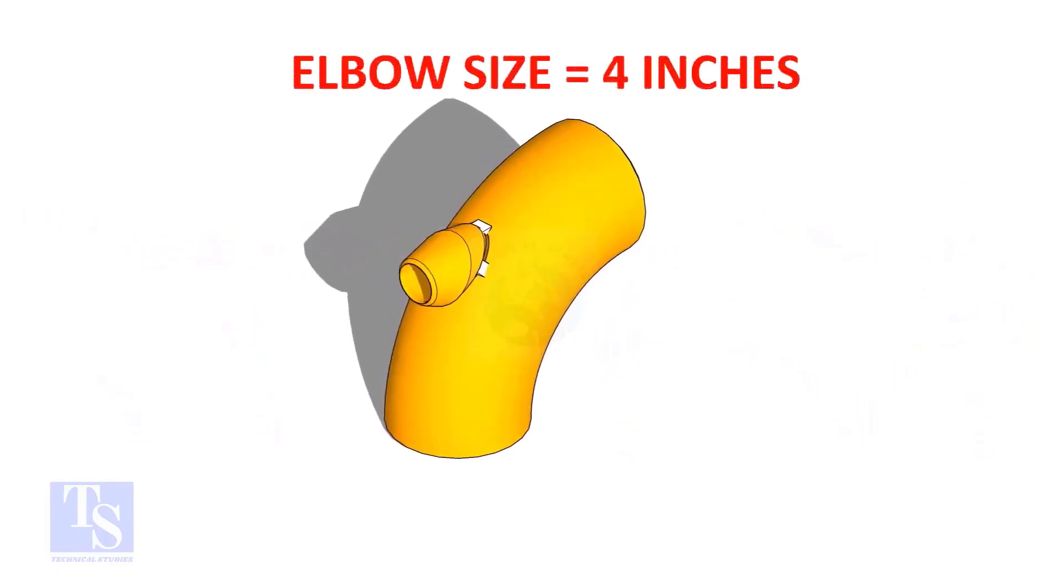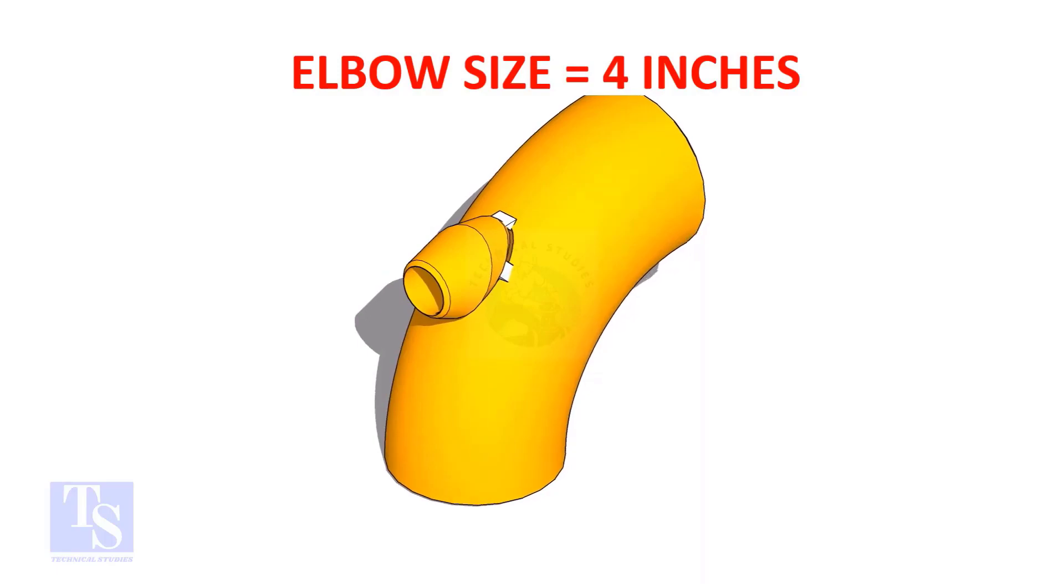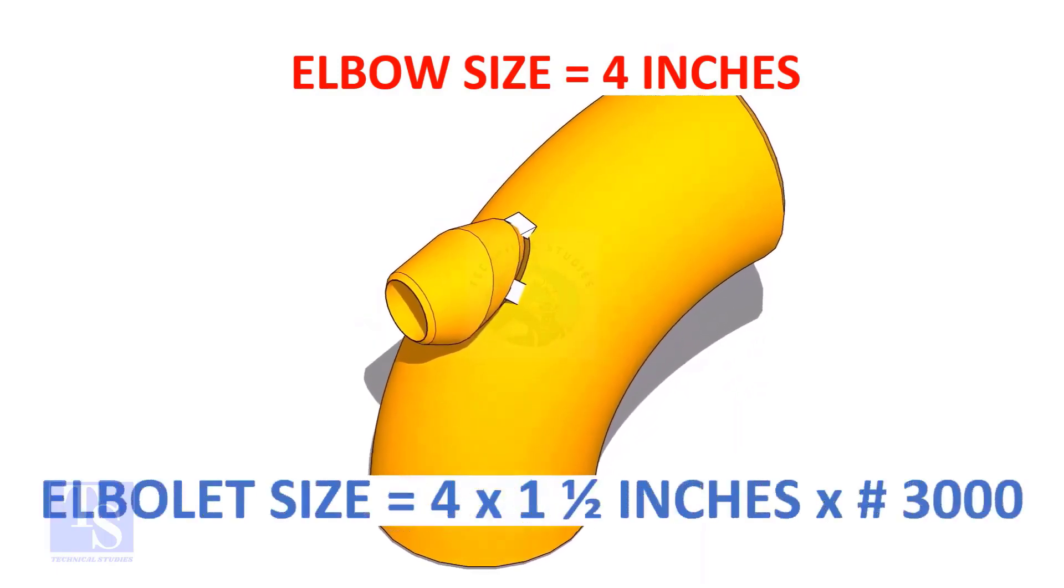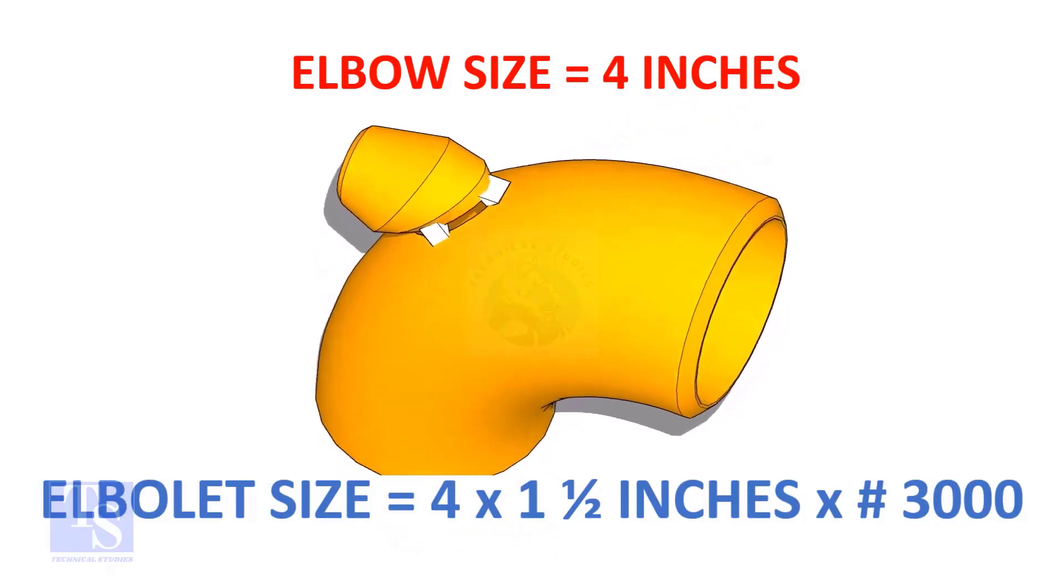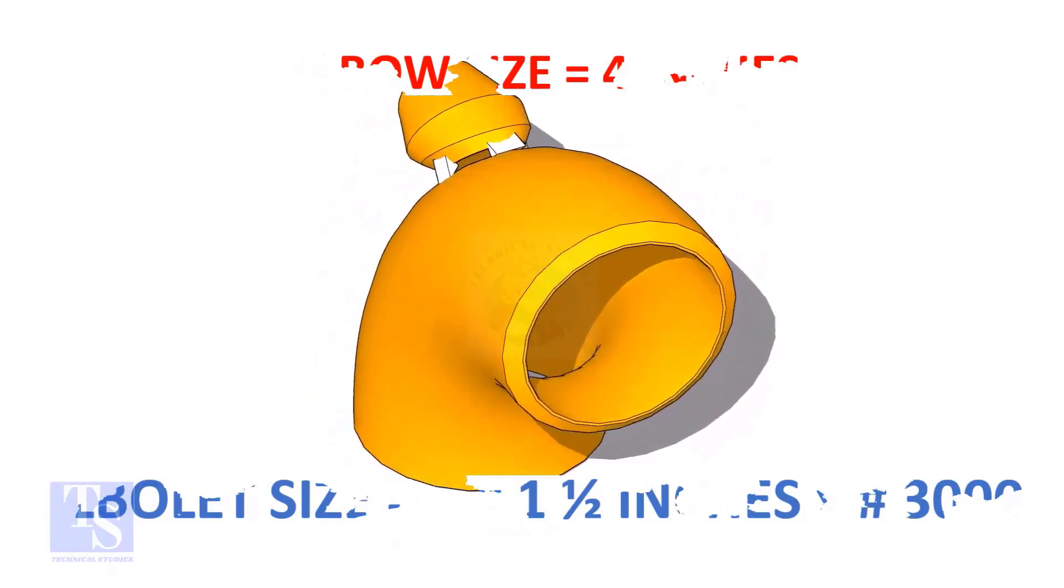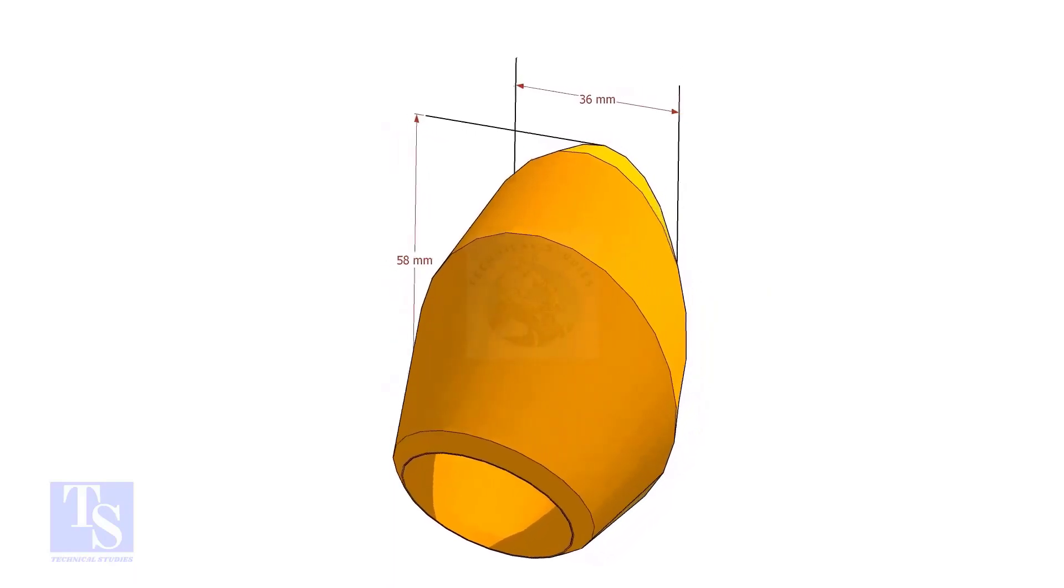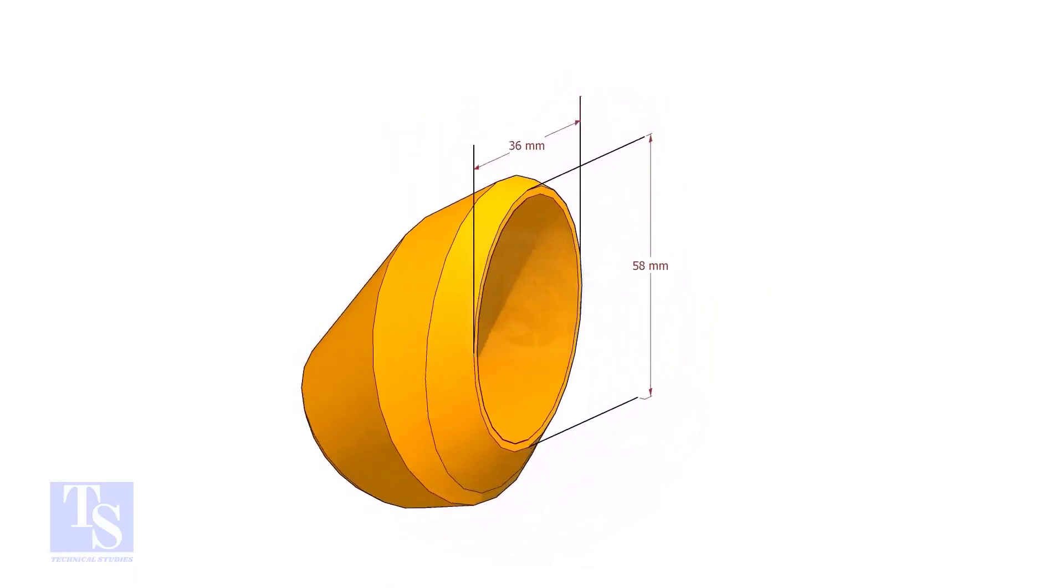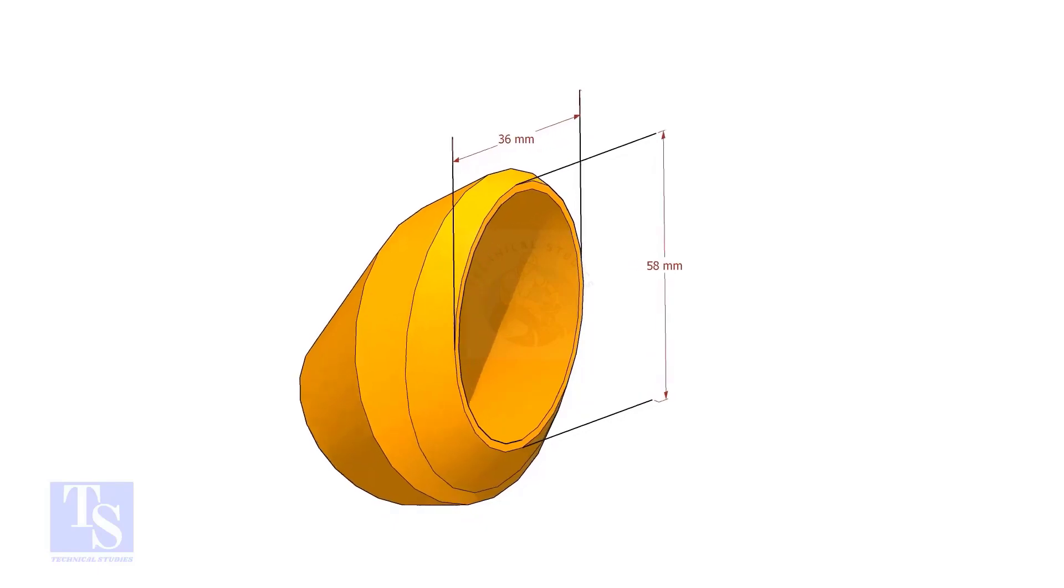The size of our elbow is four inch. The size and rating of the elbowlet is one and a half inch and three thousand pounds respectively. The bottom opening size of the elbowlet is 36mm into 58mm. Please note down these dimensions.